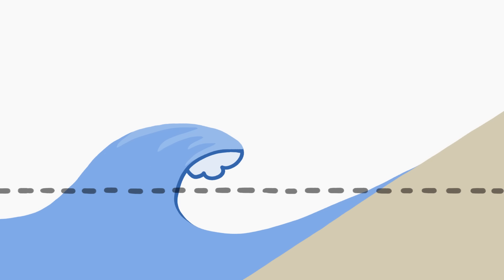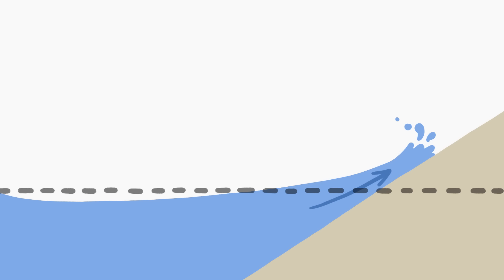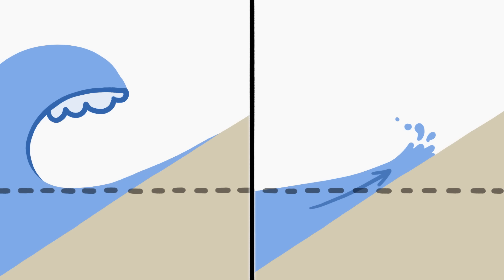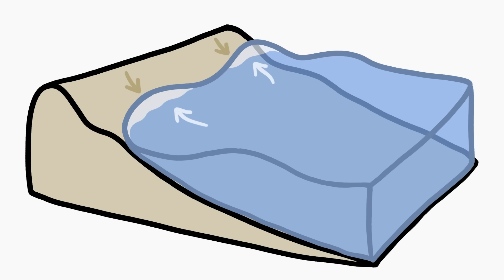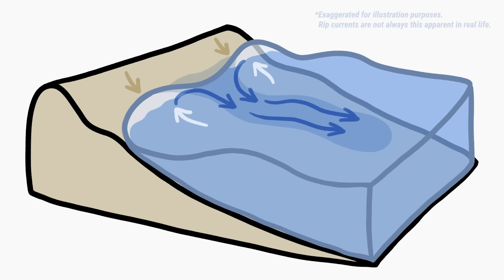When waves spill forward, it's called a break, and breaks push water against the beach, piling it up in the surf zone. The bigger the wave breaks are, the bigger the piles get. But sometimes water piles higher up the shore in some places than others. This is unstable, so instead of simply flowing back into the ocean the way it came, the water from the higher piles will instead flow downhill toward smaller piles, then out to sea — and a rip current is born.